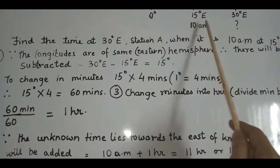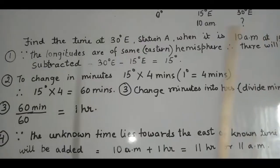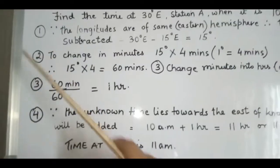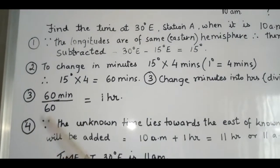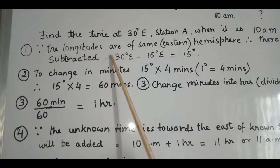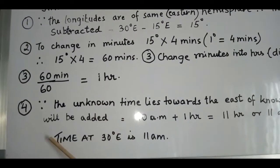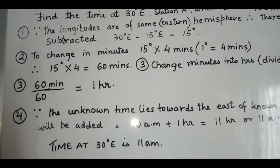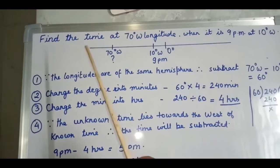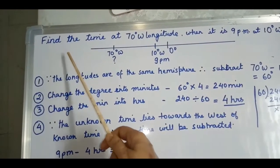Two steps are very important: step one and step four, because mistakes in these will make your answer wrong. Now let's do another example: find the time at 70 degrees west longitude when it is 9 PM at 10 degrees west.